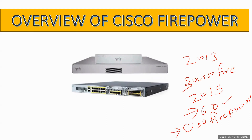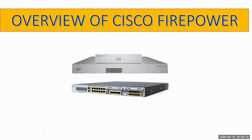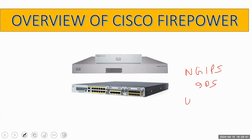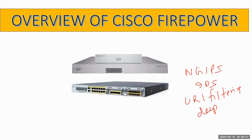When we say next-generation firewall, let's understand what it actually means. A next-generation firewall caters to current market requirements that the traditional ASA firewall could not fulfill. Next-generation firewalls come with capabilities such as next-generation IPS (Intrusion Prevention System), IDS (Intrusion Detection System), URL filtering, and deep packet inspection — all features that were missing in traditional firewalls. To meet these new requirements, Cisco acquired SourceFire and released version 6.0 under the market name Cisco Firepower.